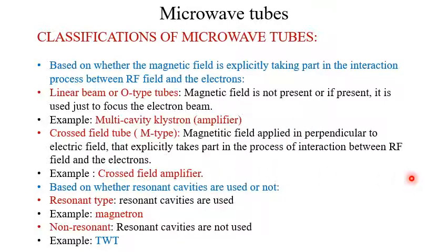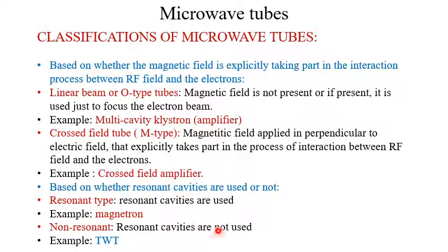We also have classifications based on whether resonant cavities are used. The resonant type tube uses resonant cavities — an example is the magnetron. The non-resonant type does not use resonant cavities — an example is the traveling wave tube, or TWT.